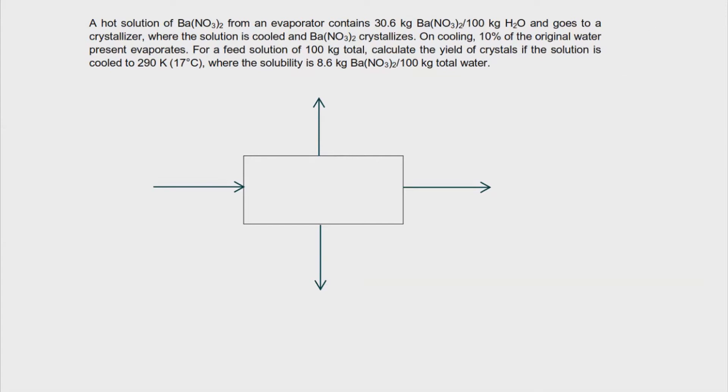And then I can label all of this as the feed, which is actually equal to 100 kg. So we have F equals 100 kg, and we know that this feed is fed at 30.6 kg per 100 kg H2O. So it is important that you note this ratio of each solution, because sometimes it is represented in terms of per solution instead of per solvent. So you have to specify that when you try to provide the given.